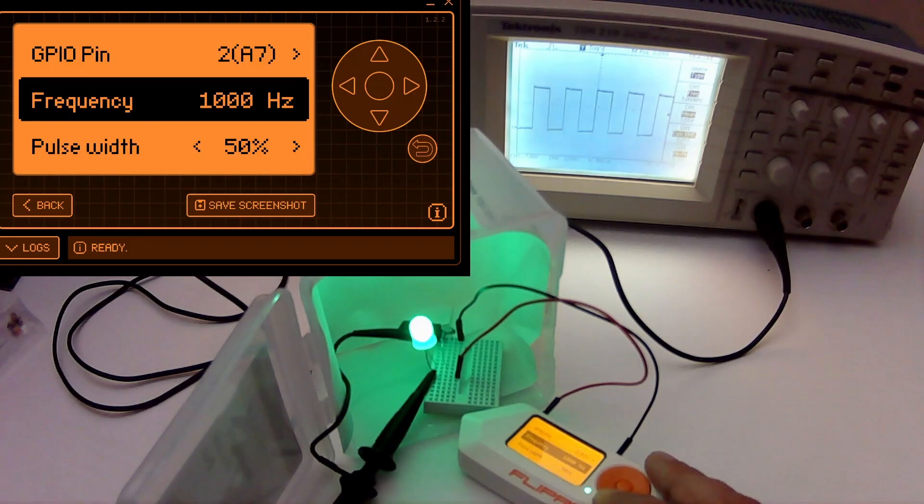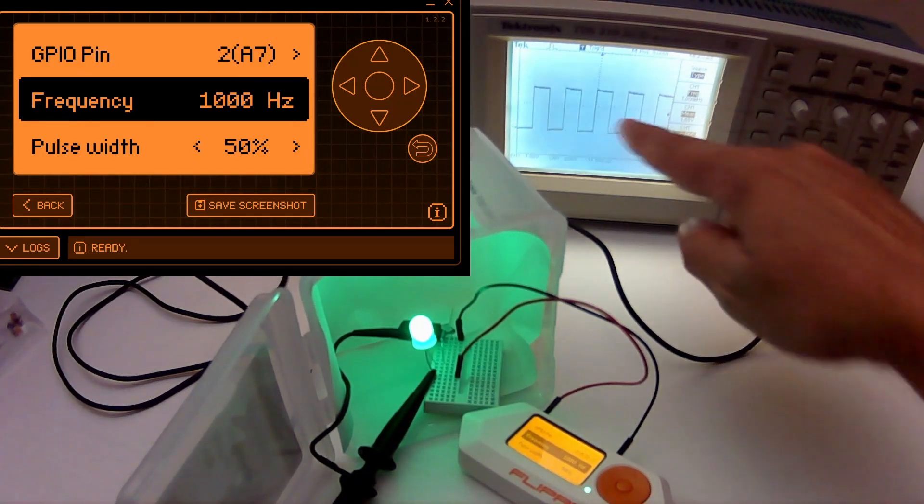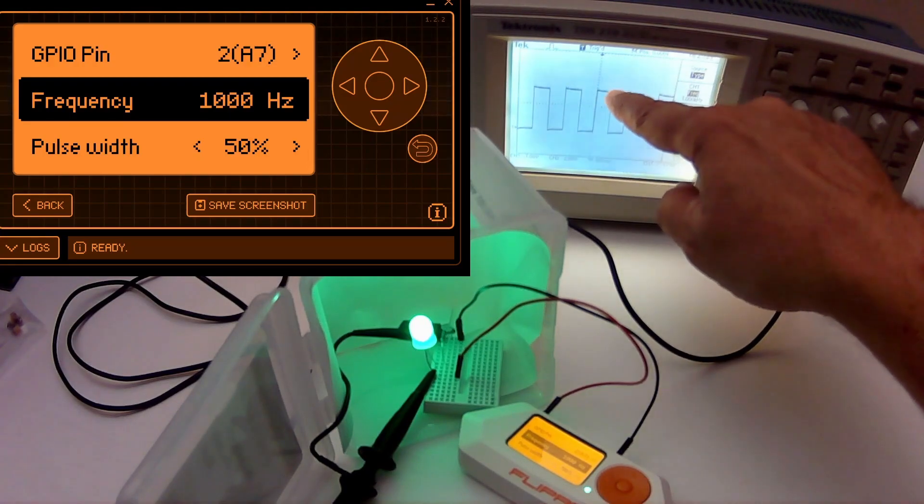We're at a thousand hertz which means it turns on and off a thousand times in a second. I've connected my oscilloscope and we can see each pulse is one one thousandth of a second.